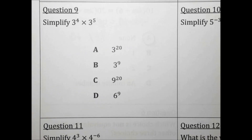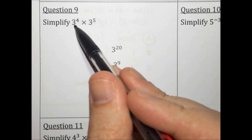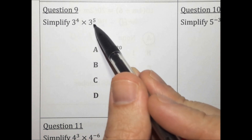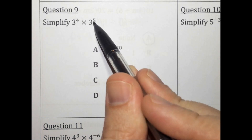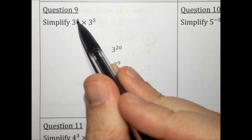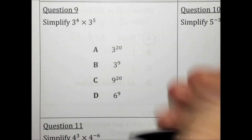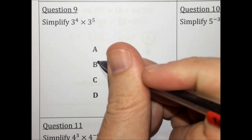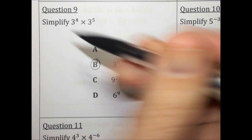Simplify 3 to the fourth times 3 to the fifth. When you multiply, you add the exponents. 4 plus 5 is 9. The answer is 3 to the 9th. Choice B.